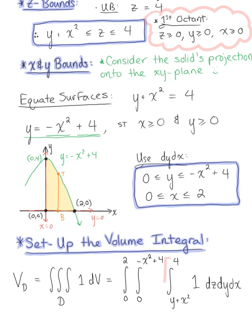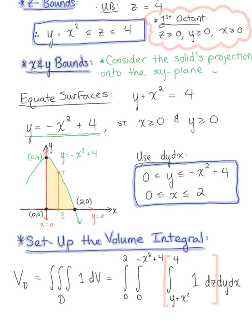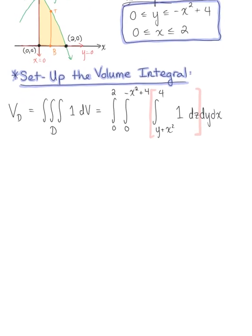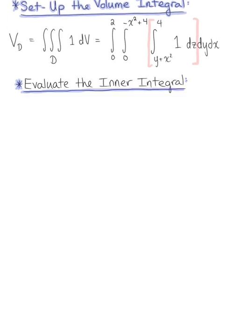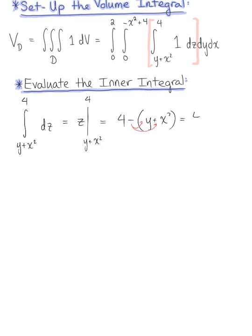We begin by evaluating the innermost integral with respect to z. The integral from y plus x squared to 4 of dz integrates to z, evaluated from y plus x squared to 4. This gives us 4 minus the quantity y plus x squared, and distributing the negative, we are left with 4 minus x squared minus y.